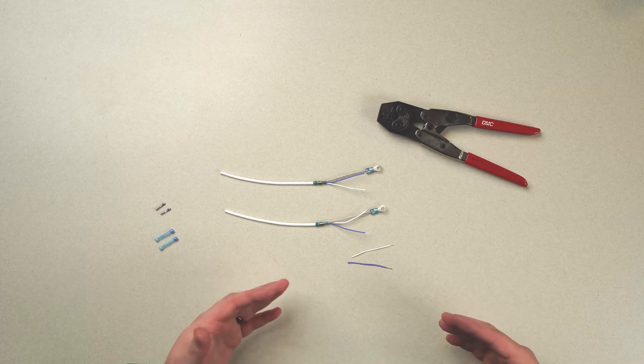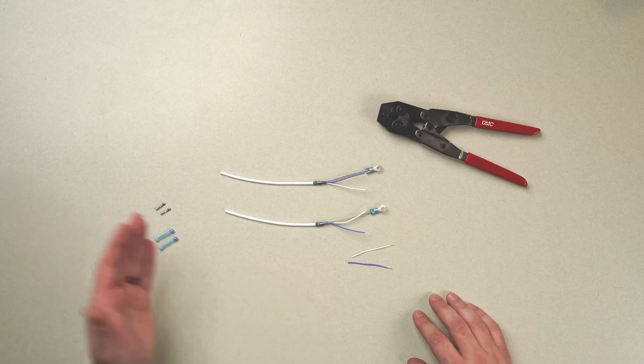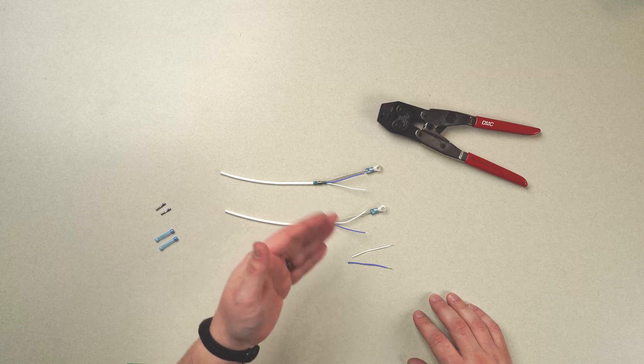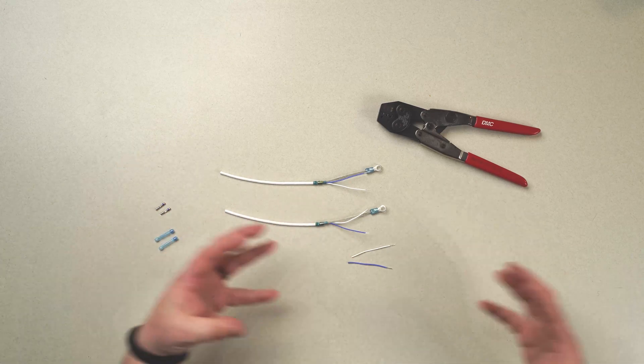Now that we have prepared our harness for wire splicing, we can take our splices, our lead wires, and our splice wires and bring them all together.